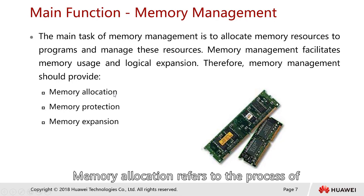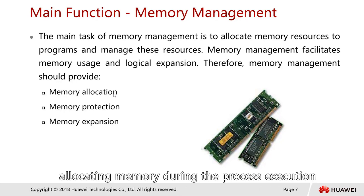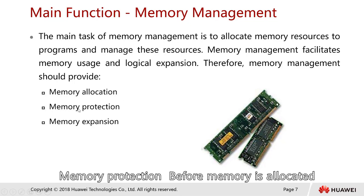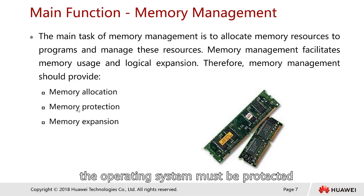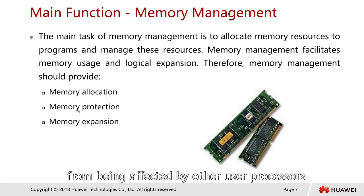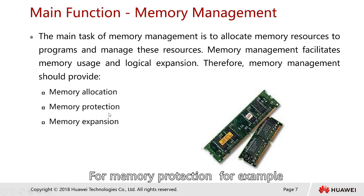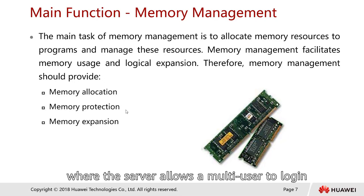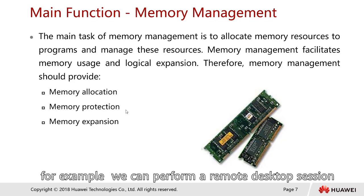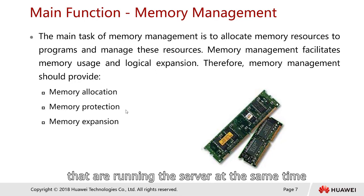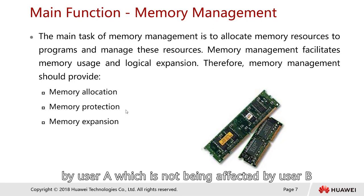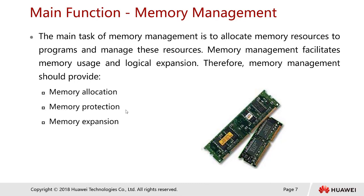Memory allocation refers to the process of allocating memory during process execution — how much memory to allocate to a certain program or process. Memory protection means the operating system must be protected from the impact of user processes, and running user processes must be protected from being affected by other user processes. For example, in a server scenario with multiple users logged in via remote desktop, memory protection ensures that services by user A are not affected by processes from user B.